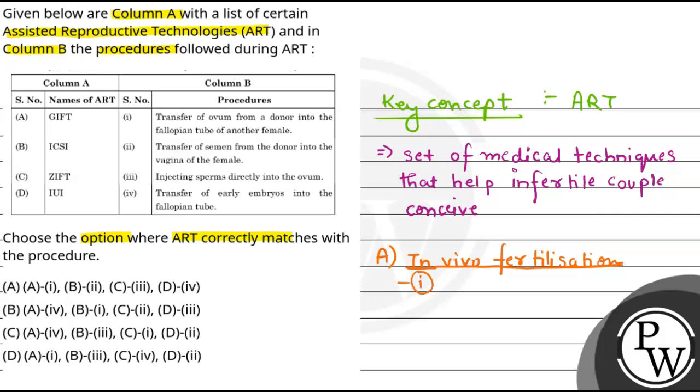Next, we have ICSI, that is Intracytoplasmic Sperm Injection. This is also an in vivo fertilization method. In this specialized procedure, to make an embryo, the sperm is directly injected into the ovum in the laboratory. The correct match for B is iii.